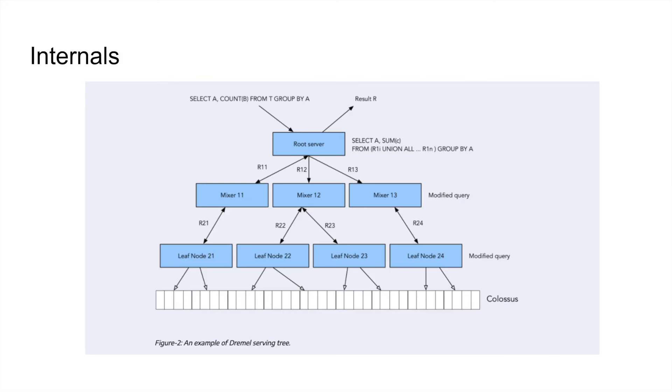As you can see in the next step, the mixers generally get the modified query, which is then further divided into other subqueries or other subset of queries and given to leaf nodes. The leaf nodes are the ones which actually query or actually talk to the Colossus database, fetches the data, executes appropriate operations on top of that and returns the data back to mixers, which then return to root servers and the data is aggregated and returned as a result.